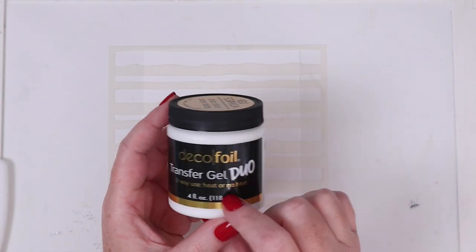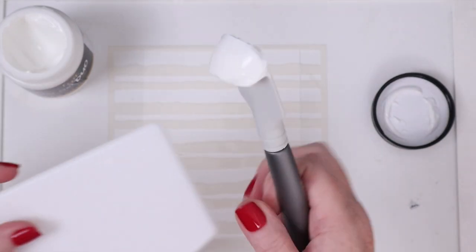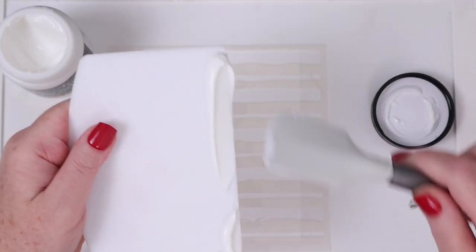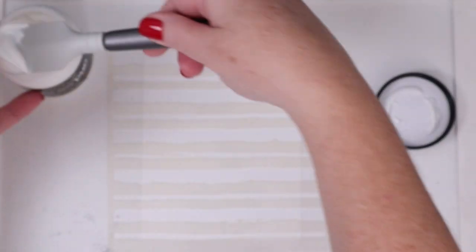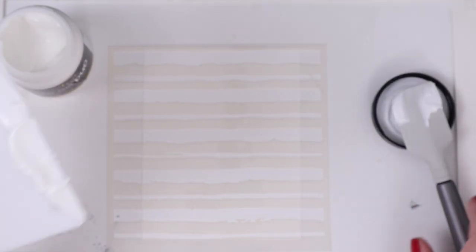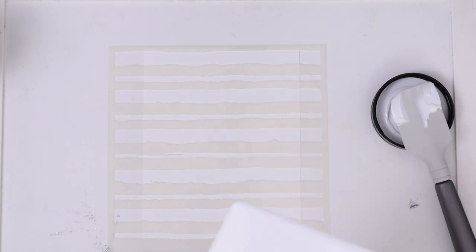It's a good idea to press down on the stencil to allow the Pixie Spray to temporarily adhere to the cardstock so it stays stuck down while you're working on it. I'm using the Thermoweb Deco Foil Duo Gel, which means you can apply the foil with heat or pressure. I scoop out the gel with a Tonic Studio spatula and place it on the straight edge of Thermoweb's Stencil Pal. I want to make sure there's enough to fill in all the open spaces of the stencil.